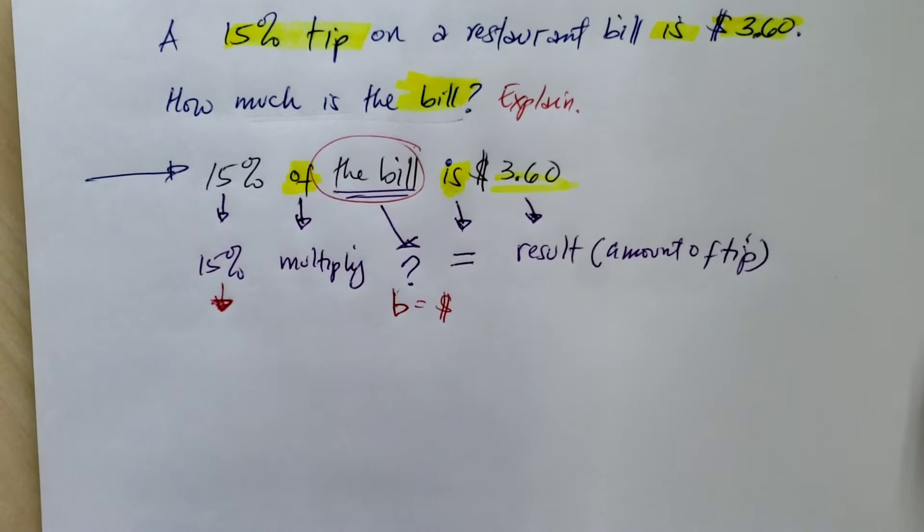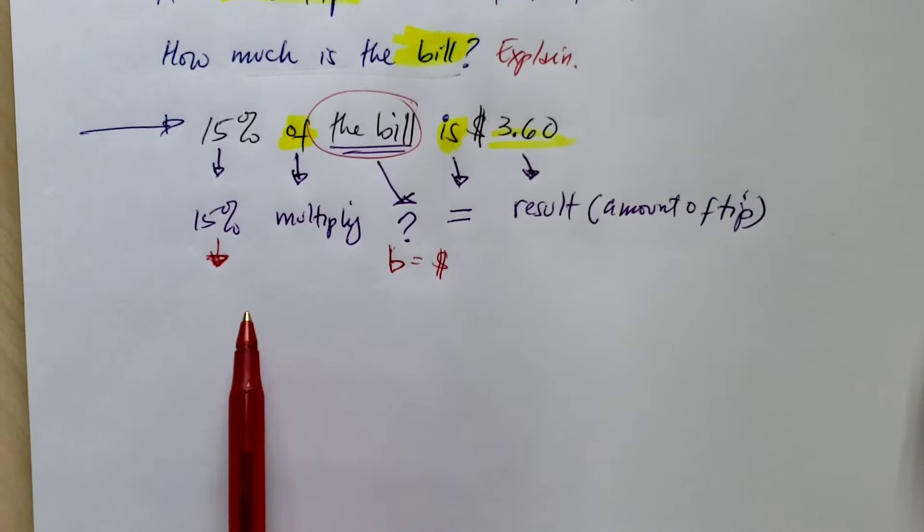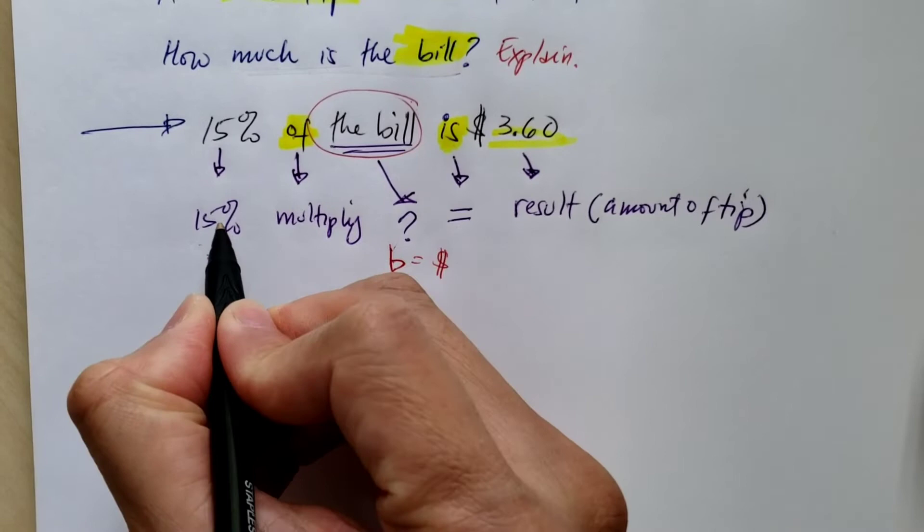Now, it's easier to work with percent problems if we change this percent into a decimal form. So how do we change a percent to a decimal form? There's two ways.